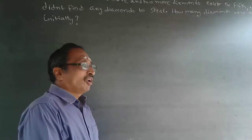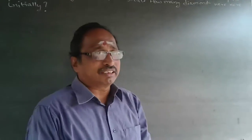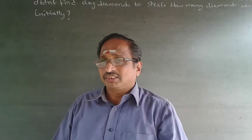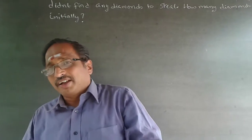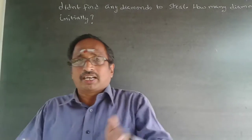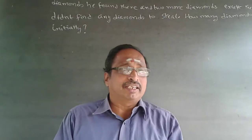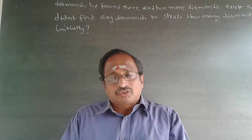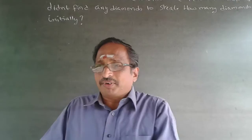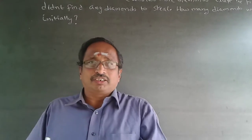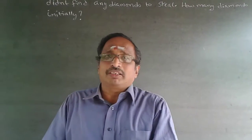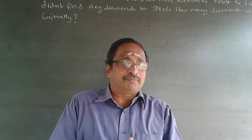This is more of a logical reasoning question. A certain number of diamonds are in the shop. Five thieves are going in one after the other. The first one takes half of the diamonds plus two pieces.